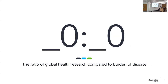Next question: the ratio of global health research spending compared to burden of disease. So we're looking at how much money we spend on research globally and what percentage of burden of disease that applies to — looking at numbers like 20:80, 50:50, or 60:40. There's a lot of money not going in the right place.